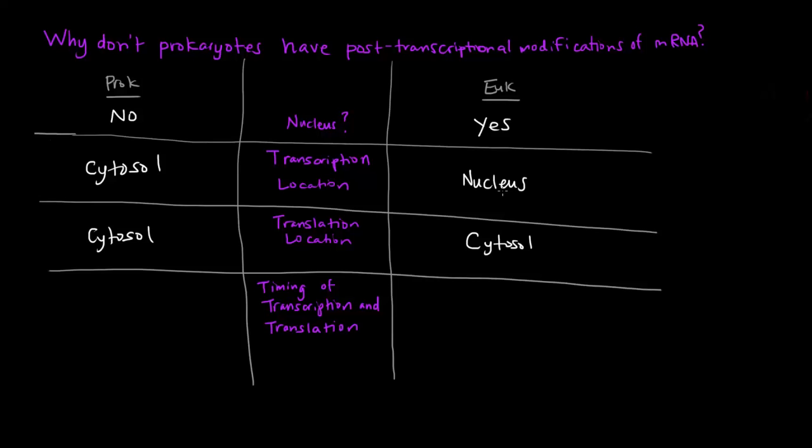Transcription occurs in the nucleus. Now, why is this important? Because in prokaryotes and eukaryotes, we have to think about the timing of transcription and translation. Well, in prokaryotes, transcription occurs in the cytosol and translation occurs in the cytosol. So, as soon as an mRNA is transcribed, the ribosomes can hop right on and begin translating away. So, the timing in prokaryotes is at the same time.